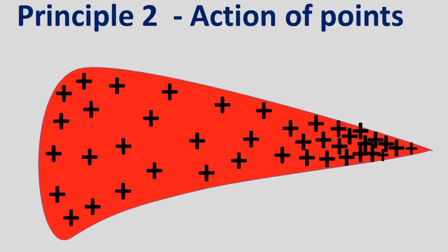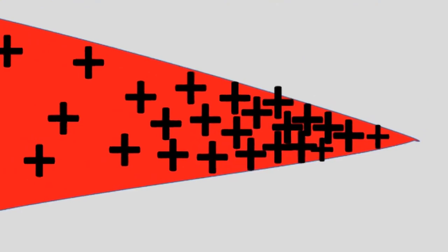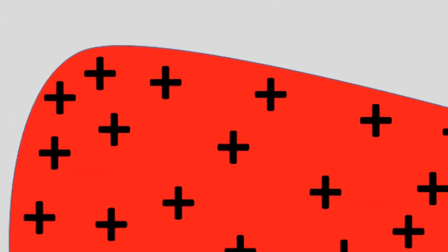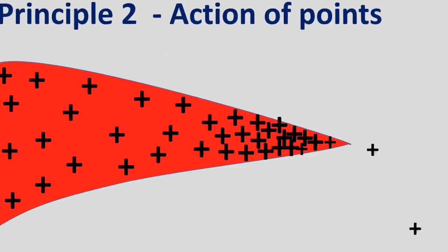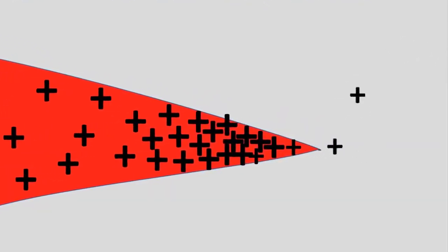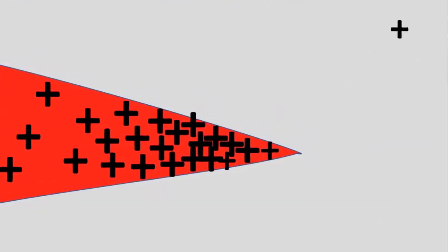They accumulate more at the sharper areas than at flatter areas. The leakage of electric charges from the sharp points of the charged conductor is known as action of points.